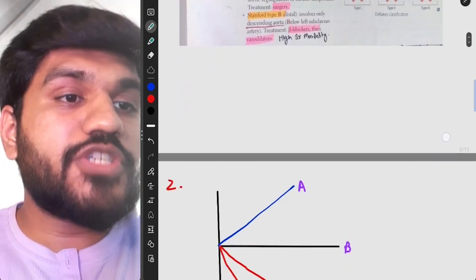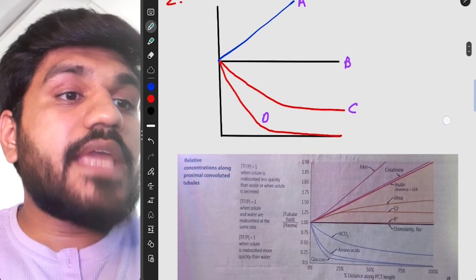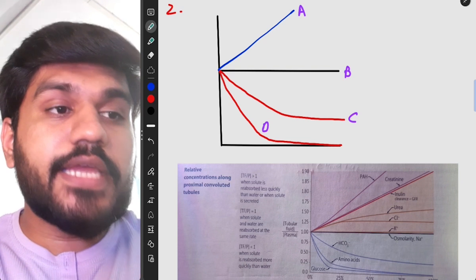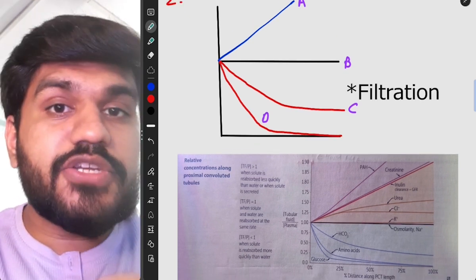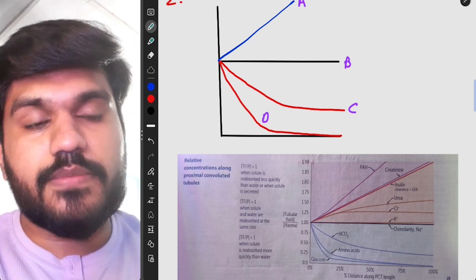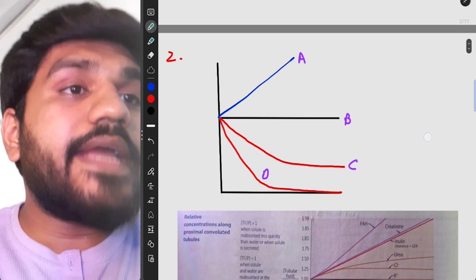If you have just done this 15 to 20 lines, you will be able to solve this question. Now let's just move on to another question and that is this graph. This same graph is in the First Aid. This graph shows a filtration of blood in the kidney.